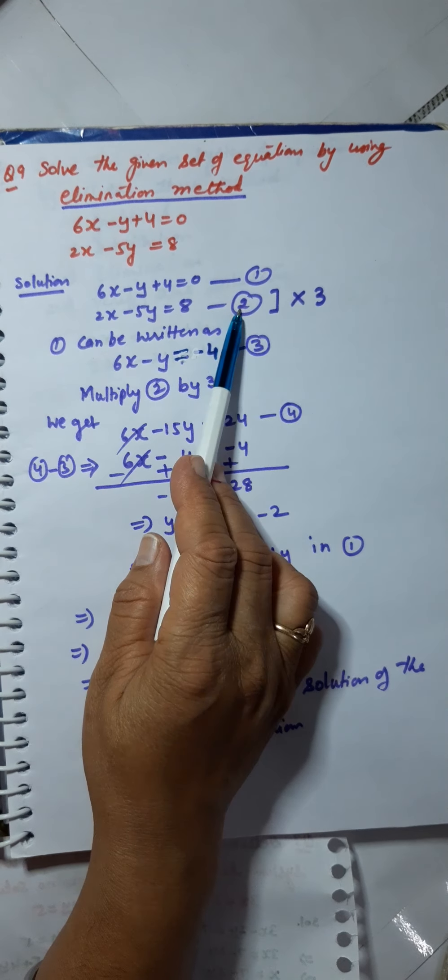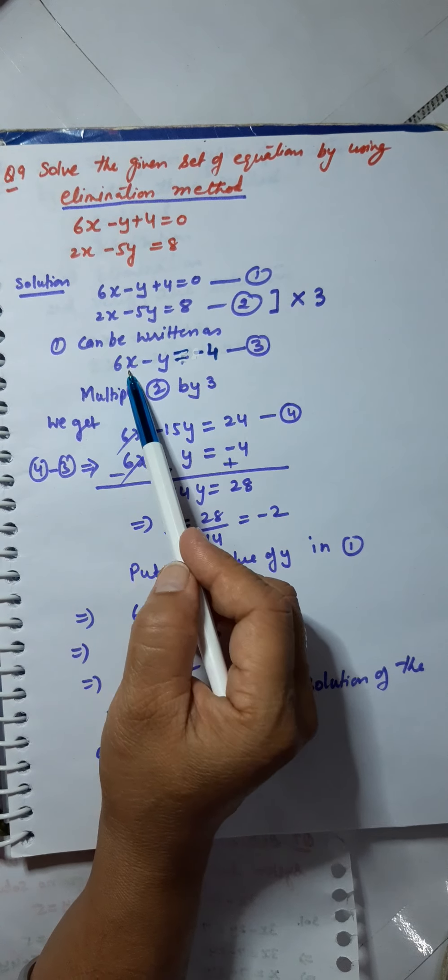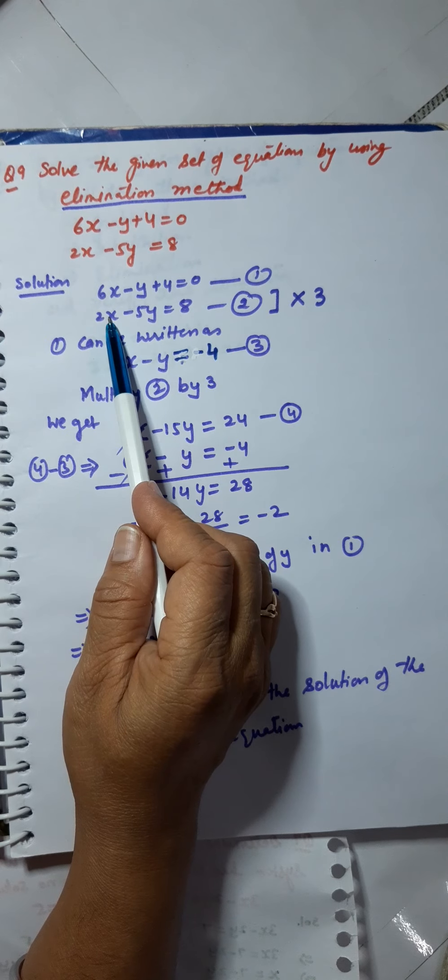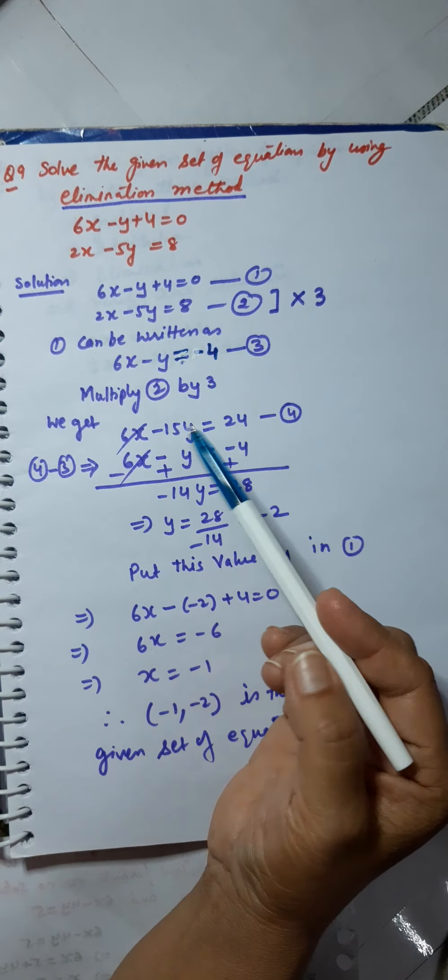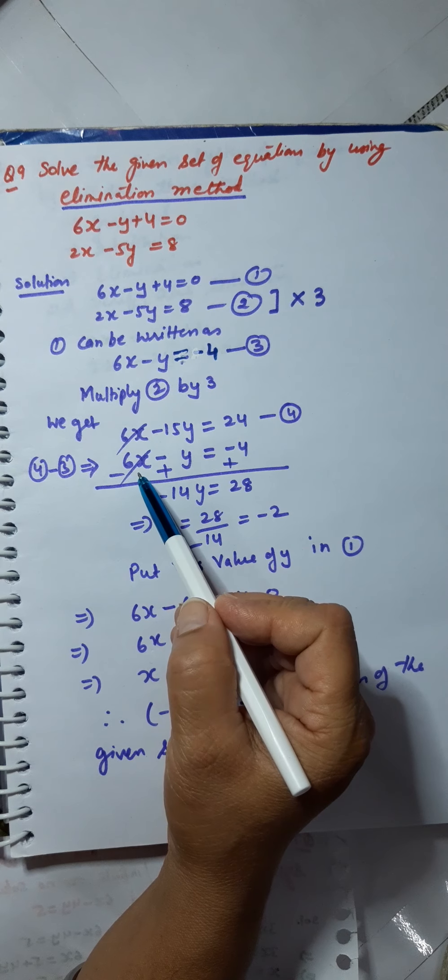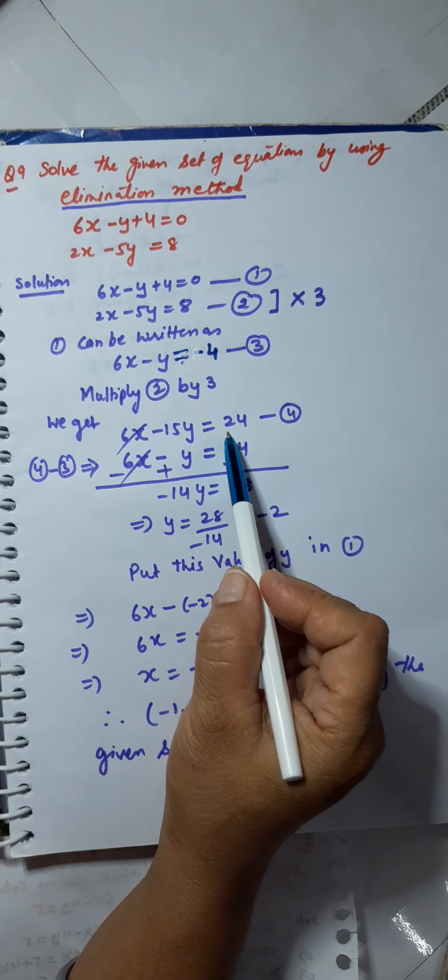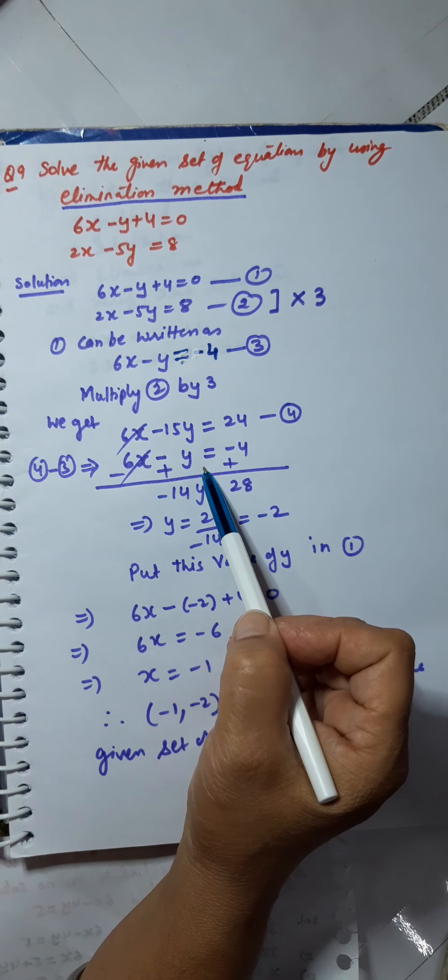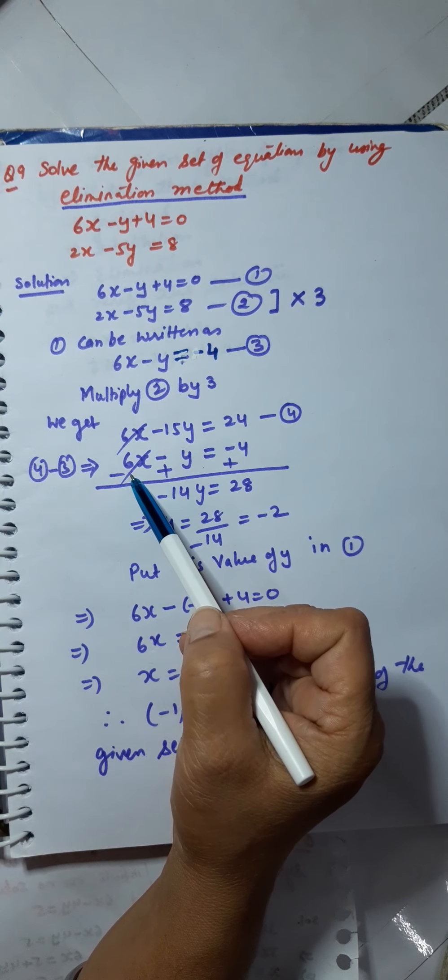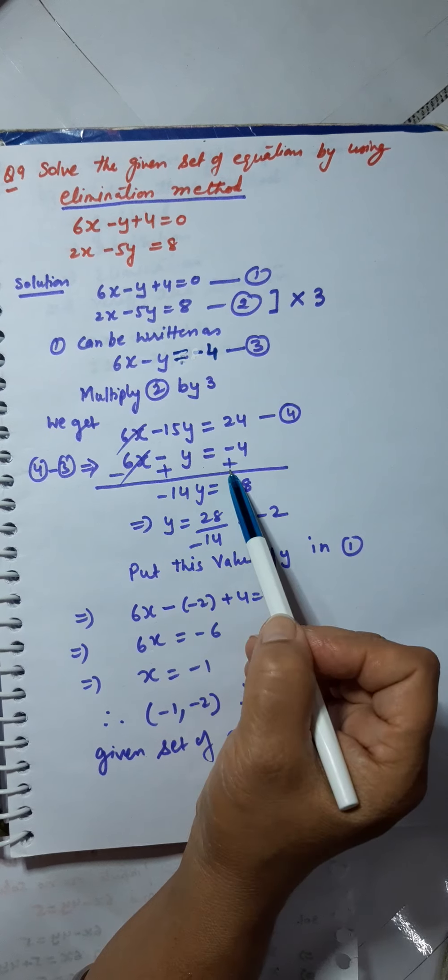Now, we will multiply number 2 by number 3. Why? Because I want to make the coefficients of the variable x same. So I multiply the whole equation by 3, which gives me 6x minus 15y equals 24. And then, this equation has to be subtracted from it. So I will subtract 6x minus y equals minus 4. Change the signs. 6x and 6x will get cancelled.